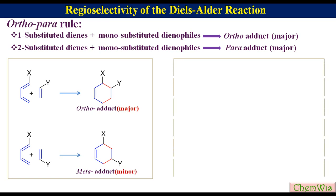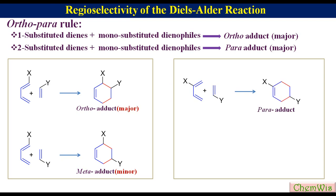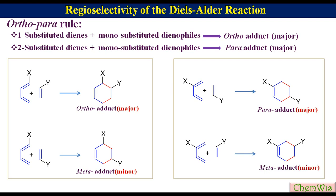According to the ortho-para rule, the ortho adduct will be the major while the meta adduct will be minor. Similarly, a 2-substituted diene and mono-substituted dienophile can orient to form the para adduct, or they can orient to give the meta adduct. According to the ortho-para rule, the para adduct will be the major while the meta adduct will be minor.